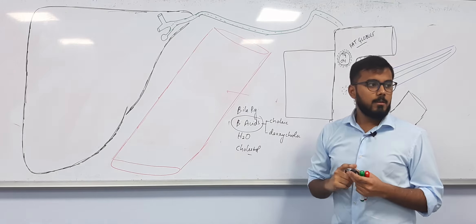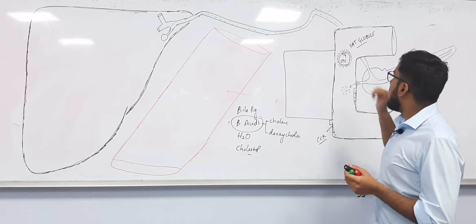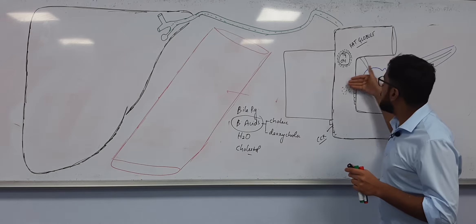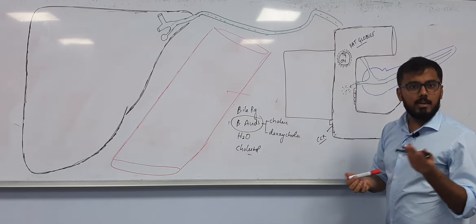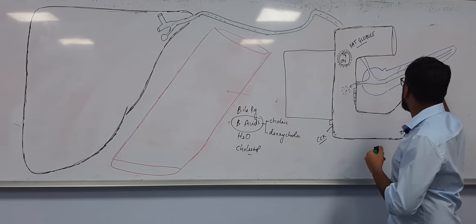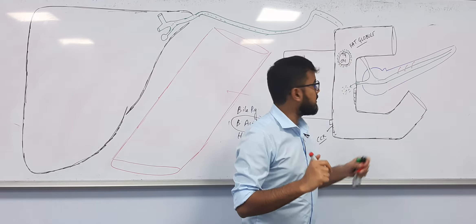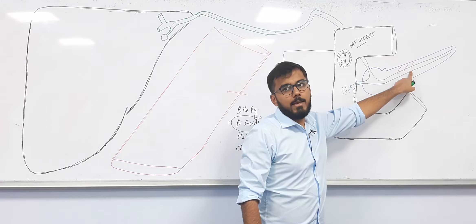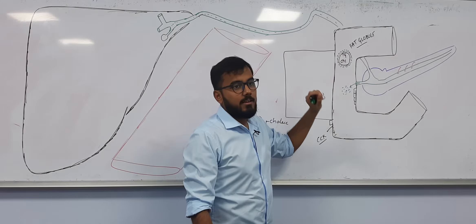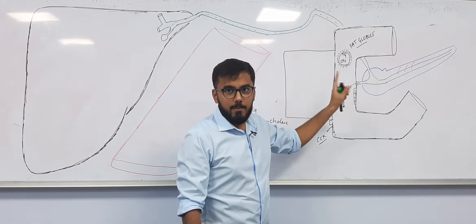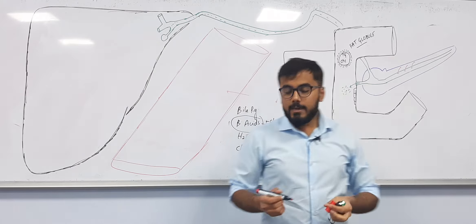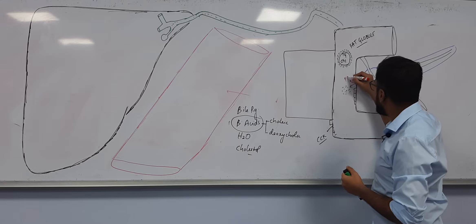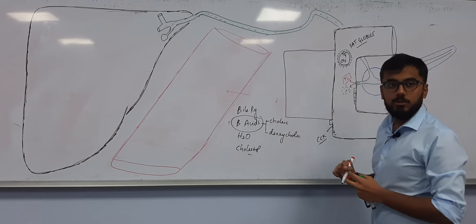The fat droplet surrounded by bile acids is called a fat globule. The moment bile acids surround it, from the pancreas enzymes are released. Pancreas releases three types of enzymes: protease, amylase, and lipase. Since we have fat here, pancreatic lipase is released.